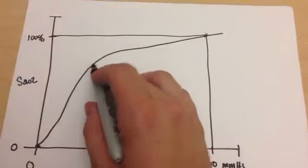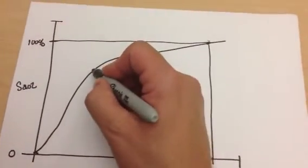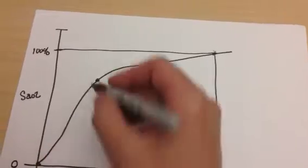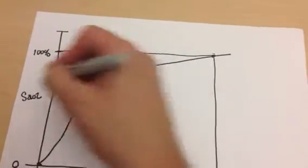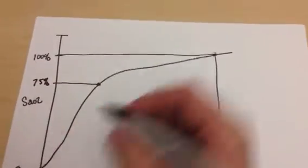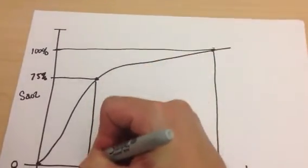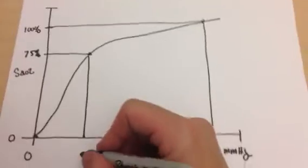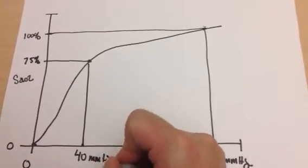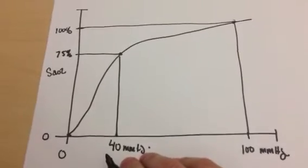Okay, and then what I'm going to do is I'm going to come down here, and we're going to just pick this point right here. And we're going to say that this point here corresponds to 75% on my SaO2. And then I'm going to draw a line down here, and that will correspond to about 40 millimeters of mercury here.